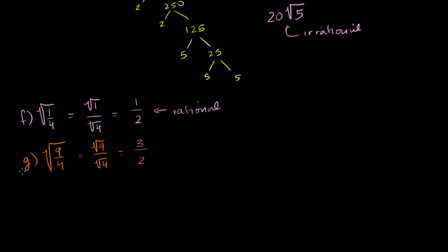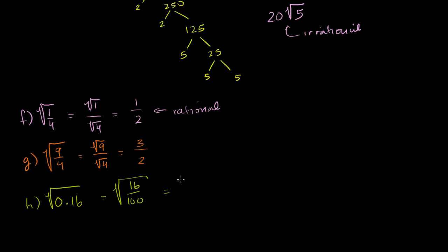Let's do part h: the square root of 0.16. You could recognize that 0.4 times 0.4 gives this, but a more systematic approach: 0.16 is 16 over 100, so this equals the square root of 16 over the square root of 100, which is 4 over 10, which equals 0.4.